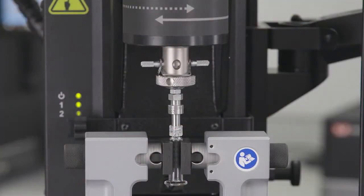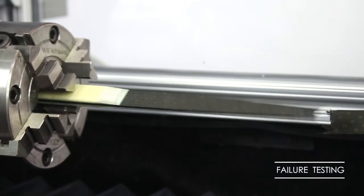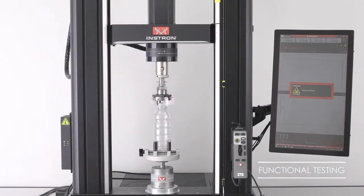Types of torsion testing vary from product to product but can usually be classified as failure, proof, or functional testing.